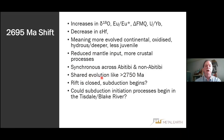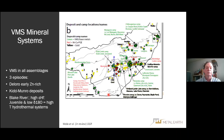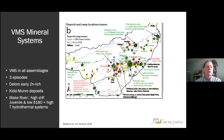We had a shared evolution prior to 2750 Ma. We'll then talk in terms of evidence for a rift, and the possibility of initiation of subduction at the time of the Tisdale and Blake River assemblages toward 2.7 Ga. Looking at VMS, we have Eastern Wabigoon, Wawa, and Abitibi, and we can see with the green stars the VMS deposits — approximately 800 million tons of VMS deposits in the diagram.